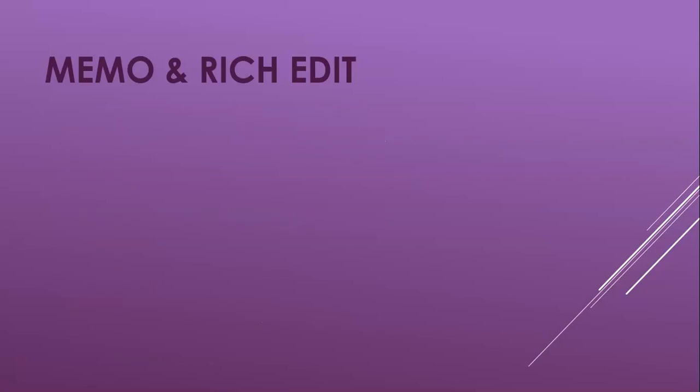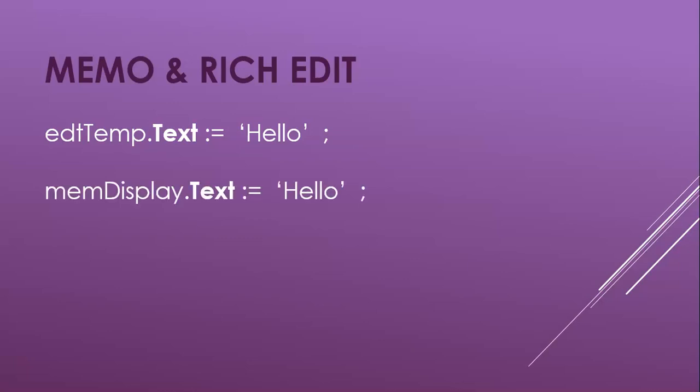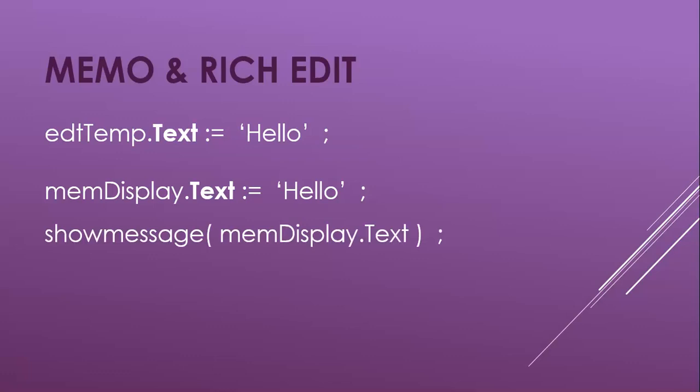How do we put values and get values into these components? If you remember an Edit control, we use the Text property to put a value in and to get from it. A Memo control also has a Text property, but it contains the text for everything that's in that Memo control — so if there are multiple lines, the Text property will contain all of those lines. It's not really ideal to change the Text property line by line; it's better suited when you want to display everything, like in a ShowMessage.